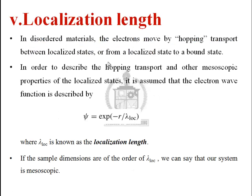Next is localization length. In a disordered material, electron movement is of a hopping nature — electrons hop from one state to another. This hopping transport can be described by an electron wave function proportional to e raised to minus r over lambda_loc, where lambda_loc is the localization length.